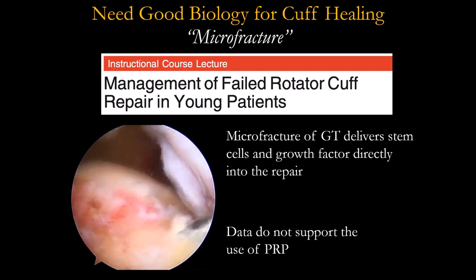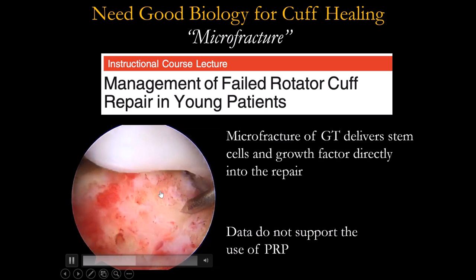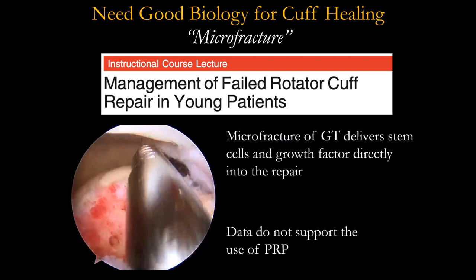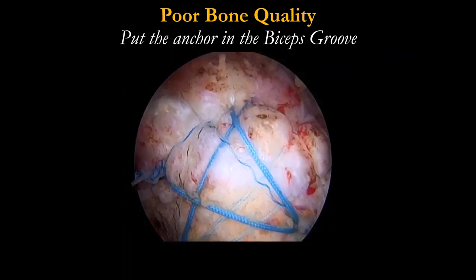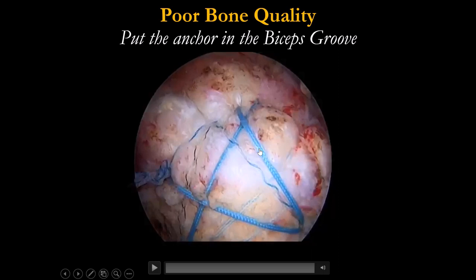From my personal experience, I prefer to prepare my footprint as best as I can, ensure good bleeding, and use microfracture to promote healing on the medial side. PRP does not have enough data to support its use for healing. In patients with poor bone mineral density, you need to know how to place the anchor — I prefer to put the anchor at the bicipital groove anteriorly.